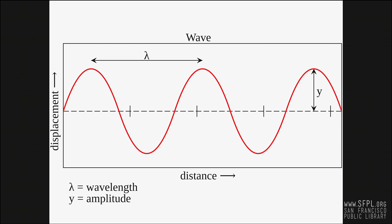Brainwaves share the same characteristics that all waves do and are measured by their frequency, amplitude, and phase. These characteristics are extracted from neural recordings using time-frequency analysis to determine a person's brainwave frequency. EEG signals have a broad spectral content similar to pink noise, but also reveal oscillatory activity in specific frequency bands.